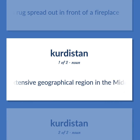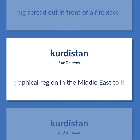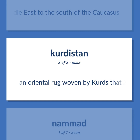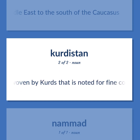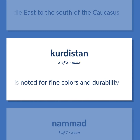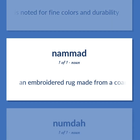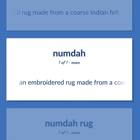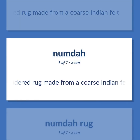An extensive geographical region in the Middle East to the south of the Caucasus. An oriental rug woven by Kurds that is noted for fine colors and durability. An embroidered rug made from a coarse Indian felt.